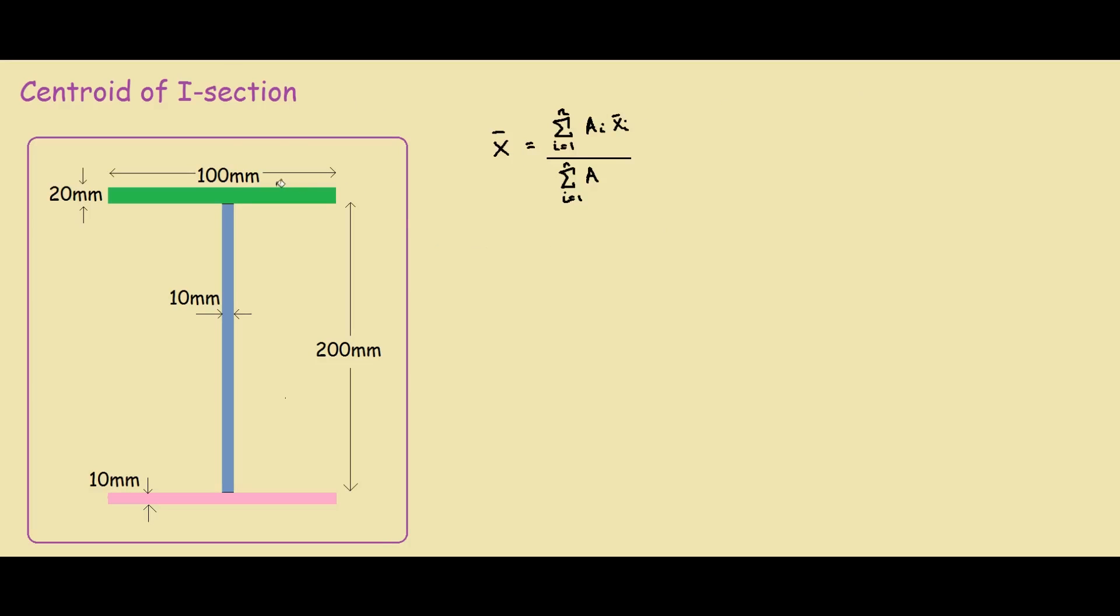As you can see we have the green part, blue part and pink part. For the green part we have the area is 20x100, and the centroid of the green bar is 50.